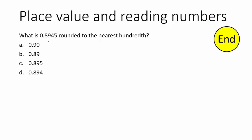Alright, rounding to a certain place value here. What is 0.8945 rounded to the nearest hundredth? You just need to know which is the hundredths place. The first digit to the right of the decimal is the tenths, the second digit is the hundredths, the third is the thousandths, the fourth is the ten-thousandths, and so on. We want to round in this spot here — the hundredths. If this digit to its right was a 5 or greater we'd round up to 90, which it's not. So this actually gets rounded off, and our choice is letter B.